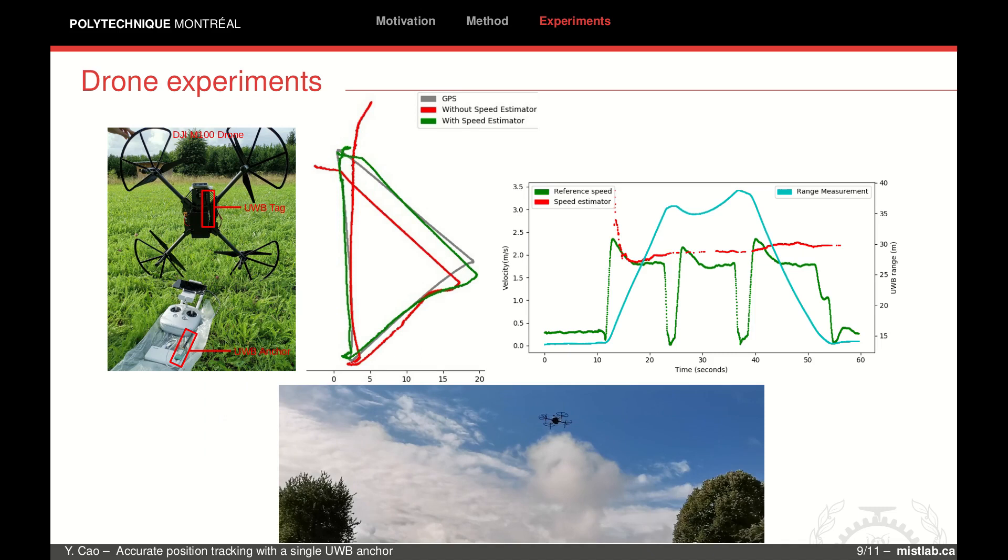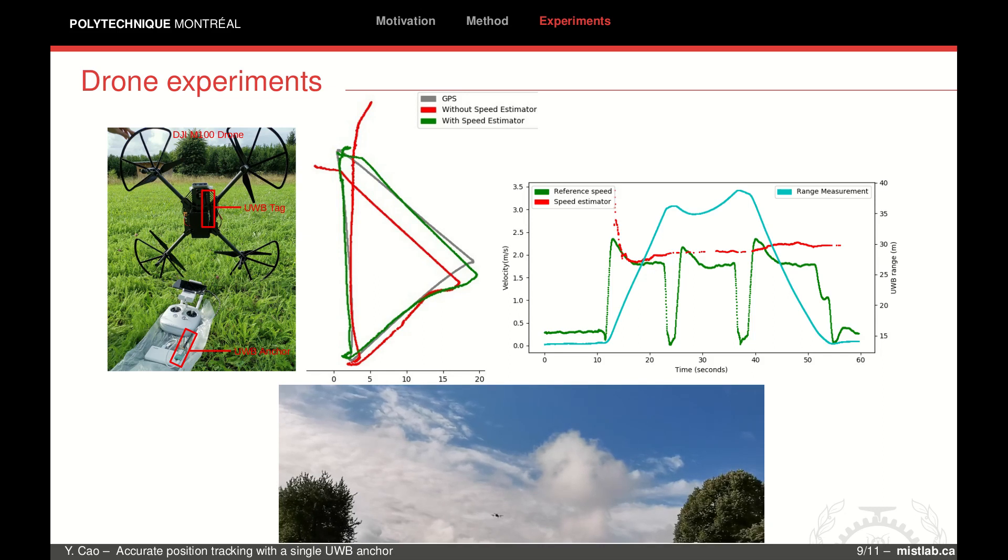We have used a DJI M100 quadcopter to verify our tracking and speed estimation in the real-world scenario, which also illustrates the potential use of 3D applications. We programmed a triangle trajectory with a speed parameter of 2 meters per second.